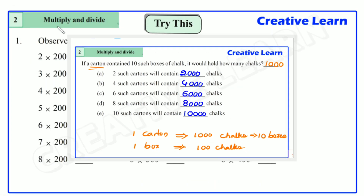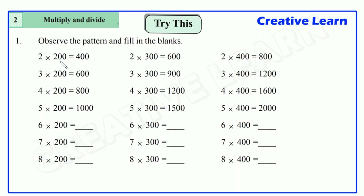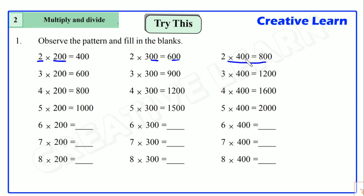Now let's observe the pattern and fill in the blanks. First: two into two hundred is equal to four hundred — two two-hundreds is four hundred. Two into three hundred is equal to six hundred — two threes are six, and there are two zeros in the ones and tens place. Two into four hundred is equal to eight hundred — two fours are eight, with two zeros common.